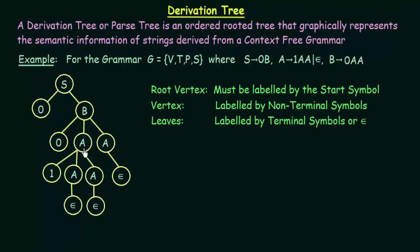From B, we see that B can give 0, A, A. So B gives 0, A, and A. The 0 is a terminal symbol so we leave it. We have two variables A and A. We see that A gives 1, A, A — so this A gives 1, A, A as its three children. Also, A gives epsilon, so the other A gives epsilon. We are then left with two more A's which we also set to give epsilon, since we want to end the derivation tree.